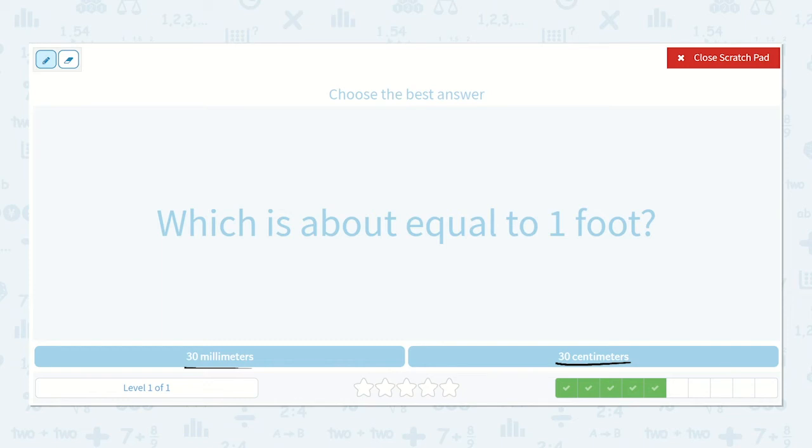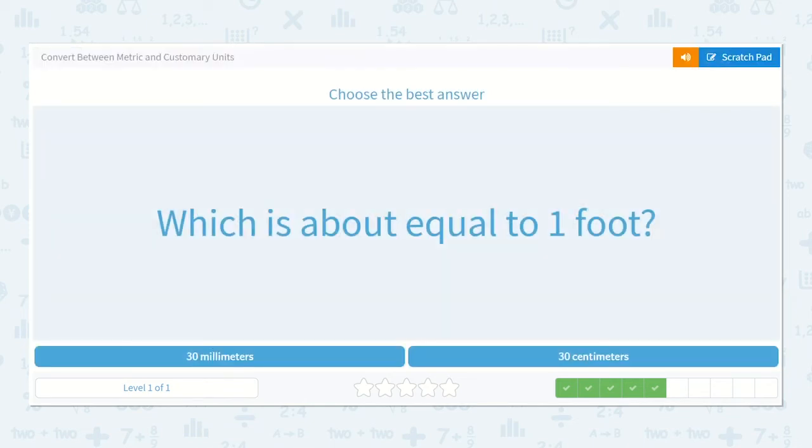And on the other side of the ruler, we have around 30 centimeters. Millimeters would be way too small. Centimeters would be closer to a foot. 30 centimeters.